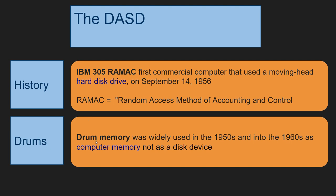They also invented in the 1950s something called drum memory, which was widely used into the 1960s. It was a spinning device used as computer memory — something the computer could read back as if it were RAM. Of course it was an electromechanical device — very slow — but still much faster than going to tape or punch cards. Drums extended mainframe memory but were not used as disk devices for storing datasets.